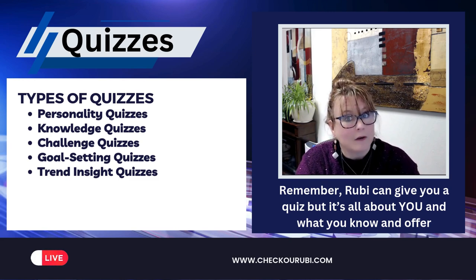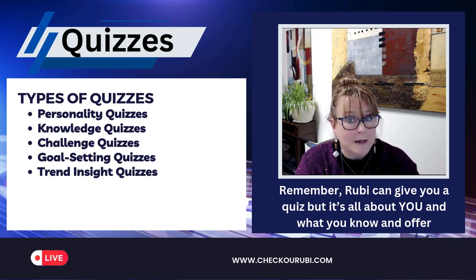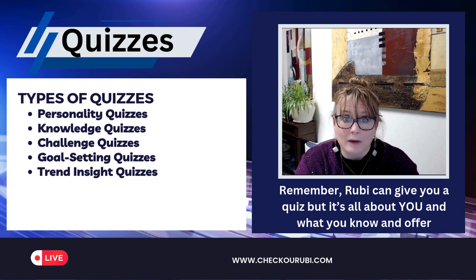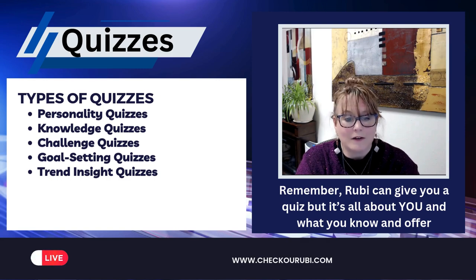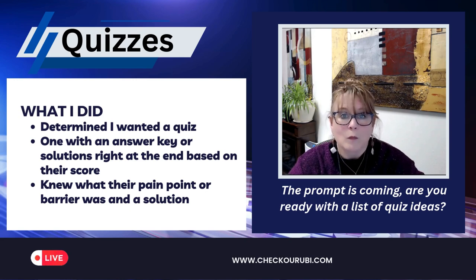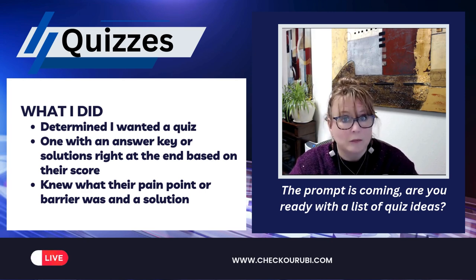Ruby can put it all together, but it's all about you. When Ruby's done, you take the questions, verify that they work for your target audience and niche and that they're accurate, reword them a little bit, make sure they come out in your voice, and then use them. About a month ago, I really wanted a quiz for my target audience and spent the whole morning working with Ruby to flesh out what I wanted it to do.